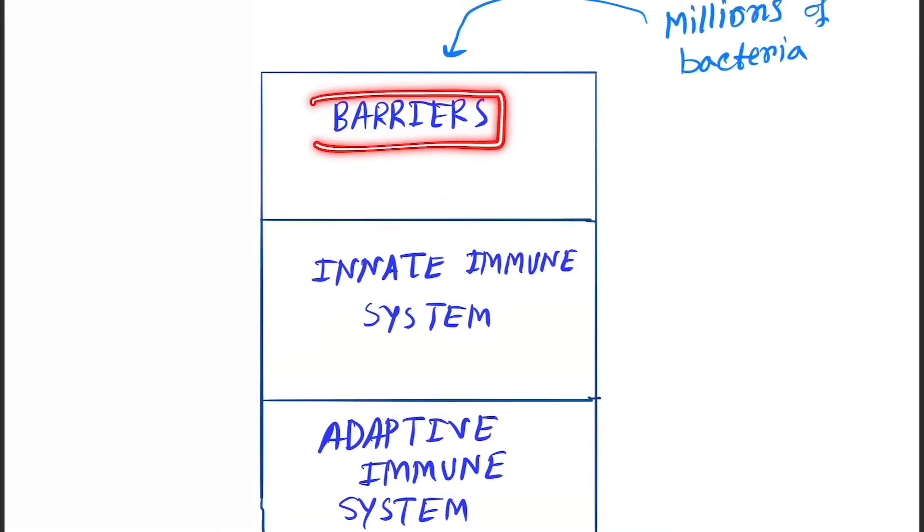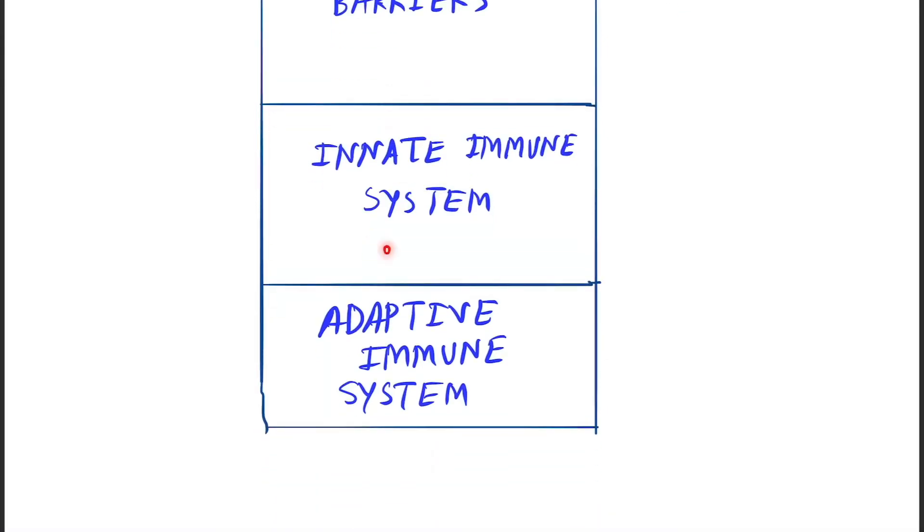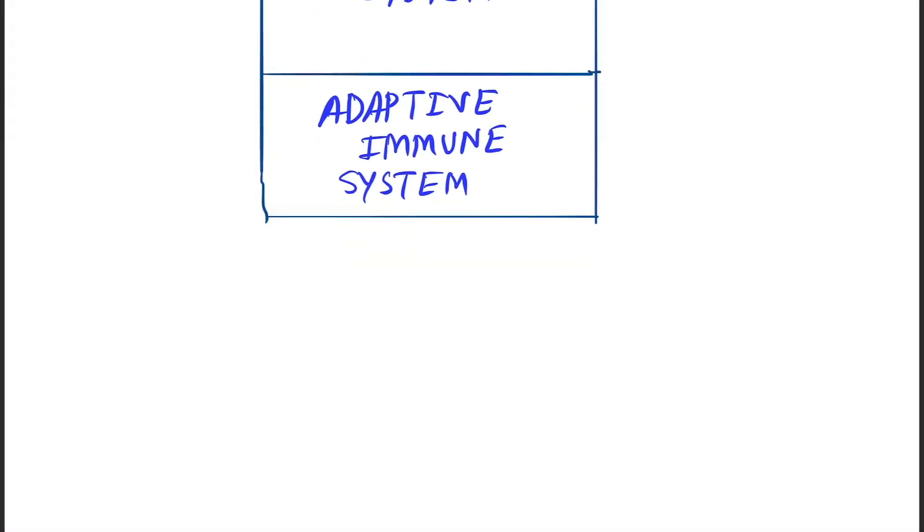Now first the barriers will come, so this is the first layer working as a filter. Next, few bacteria will be there. Next, innate immune system will come, and then the adaptive immune system will come. So now final result will be very few bacteria.